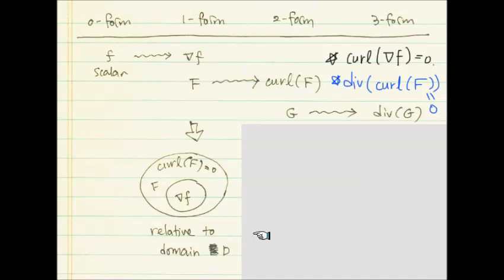Let me show you this much first. We're looking at the curl being zero for F — we looked at this in two-dimensional version using Green's theorem, but this is the three-dimensional version. If we have a gradient vector field, its curl is exactly zero. If you grab an arbitrary vector field, you don't expect its curl to be zero, but there's a collection of such vector fields F such that curl F equals zero. The gradient vector field is inside this collection — but that doesn't mean everything else with curl zero is a gradient vector field.